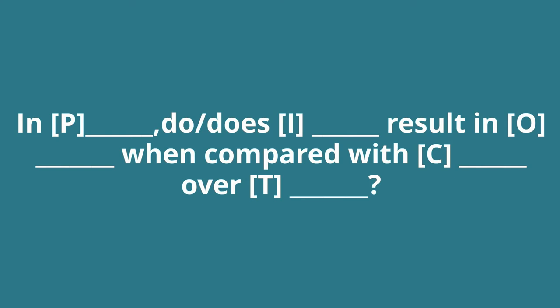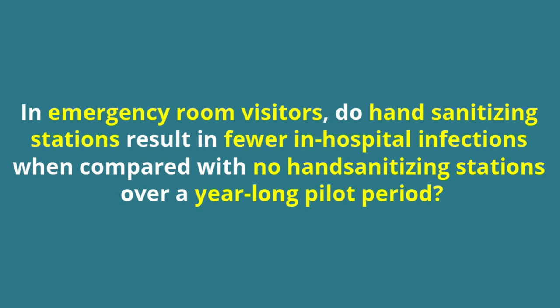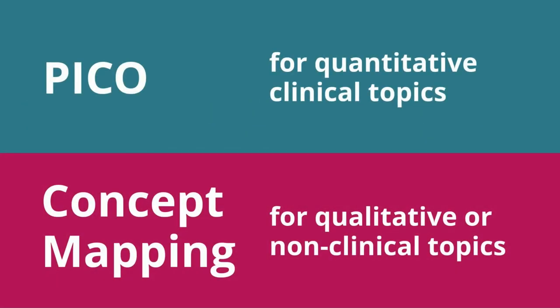If I fill this in with information I want to look at for my topic, my new question would be: in emergency room visitors, do hand sanitizing stations result in fewer in-hospital infections when compared with no hand sanitizing stations over a year-long pilot period? That's a more specific question to look at. I chose PICO because it's a quantitative clinical topic. If my topic had been qualitative or non-clinical, I might have chosen concept mapping instead.